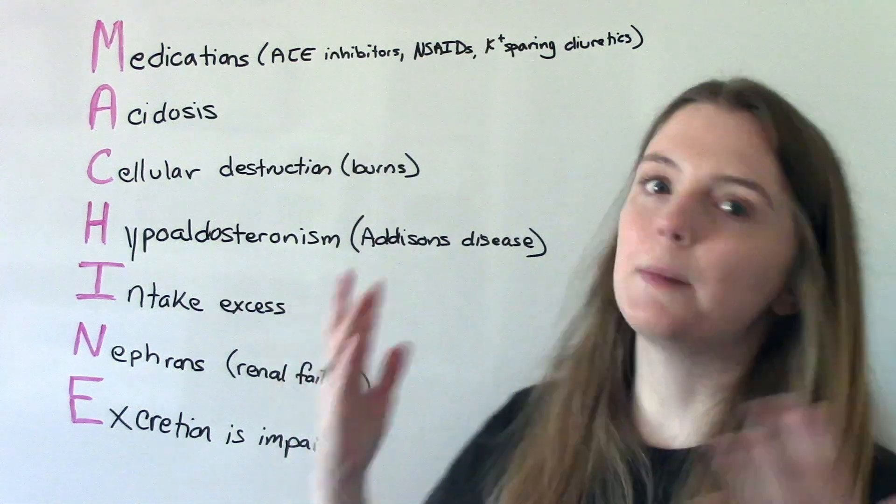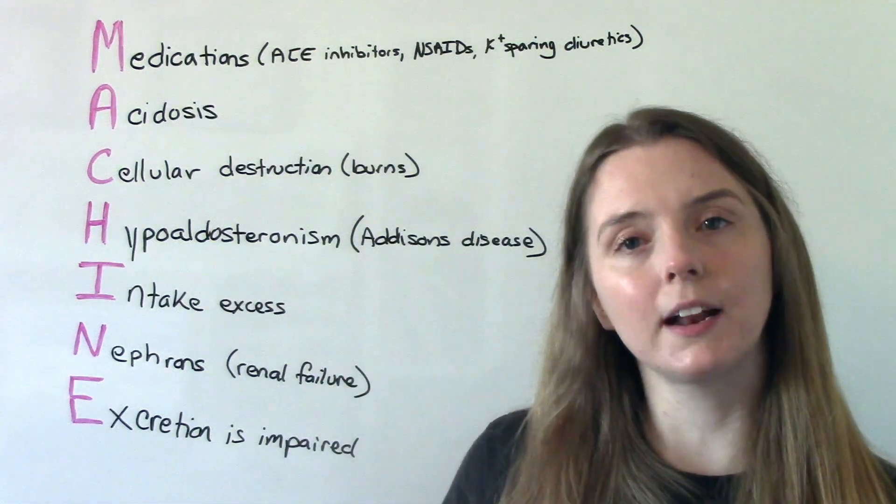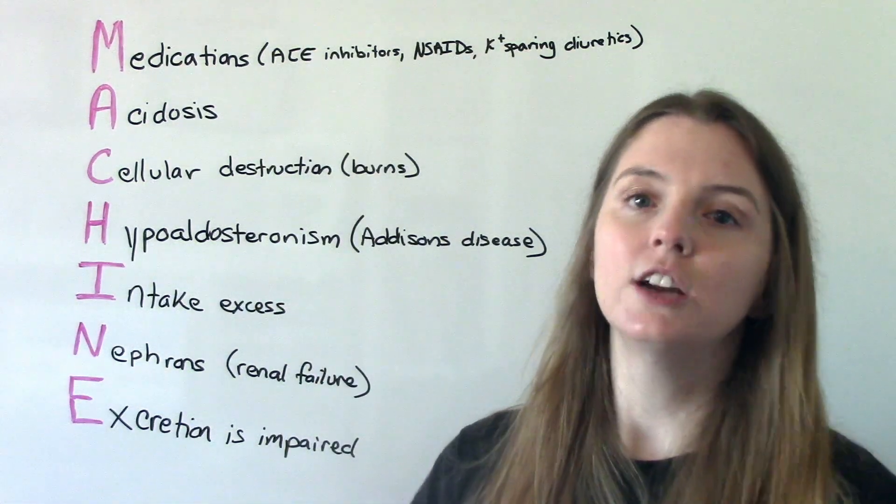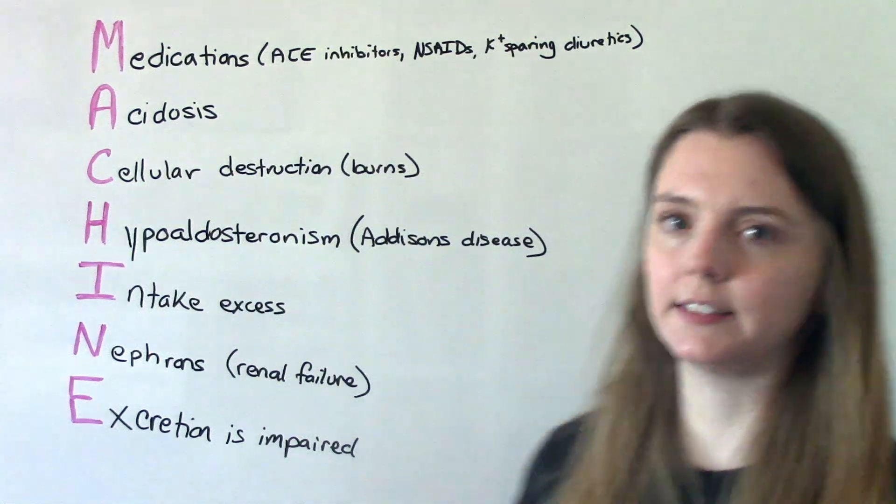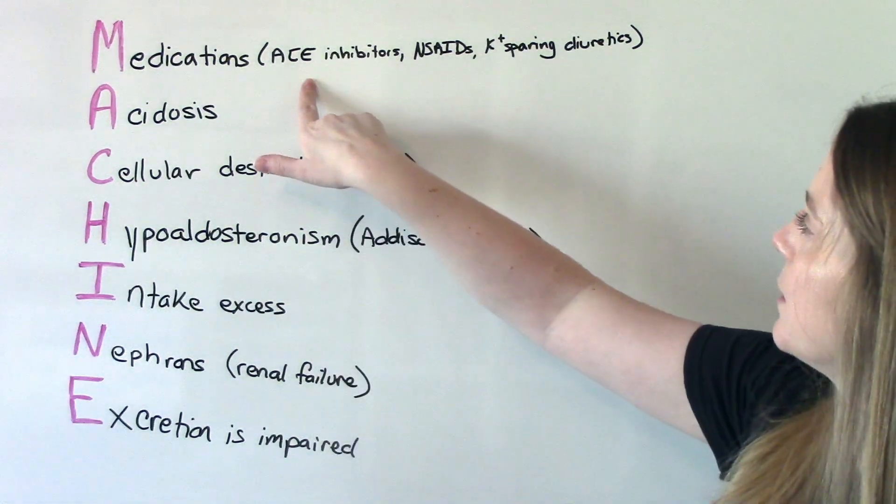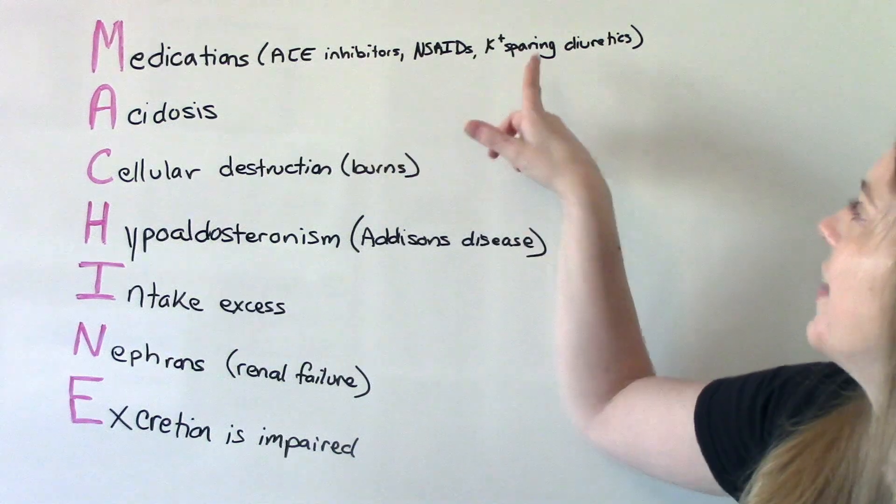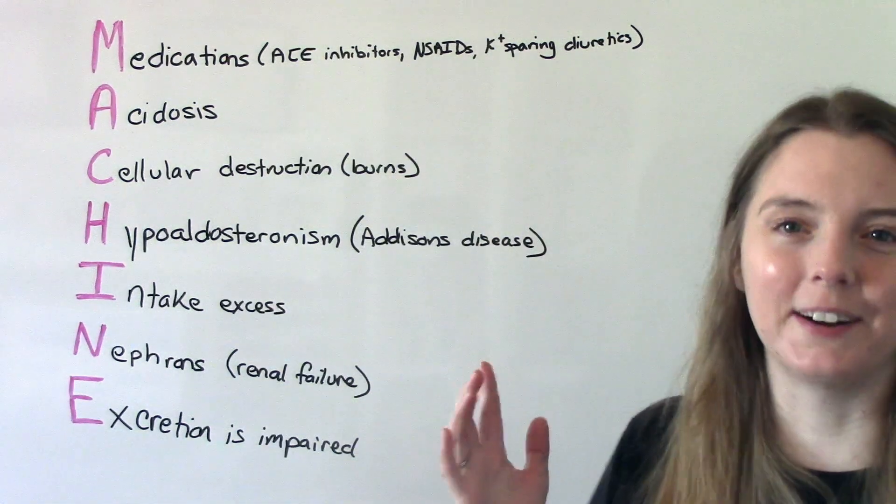The first is medication causes. Certain medications can cause the body to hold on to too much potassium, things like ACE inhibitors, NSAIDs, and of course potassium sparing diuretics.